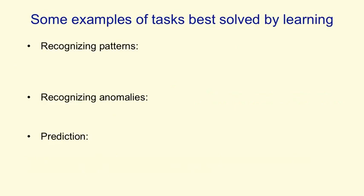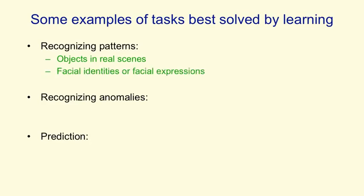Some examples of the things that are best done by using a learning algorithm are recognizing patterns — for example, objects in real scenes, or the identities or expressions of people's faces, or spoken words.